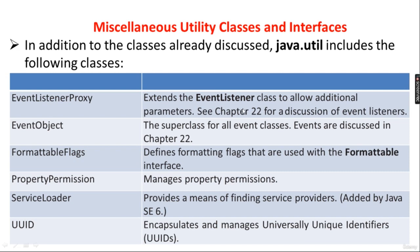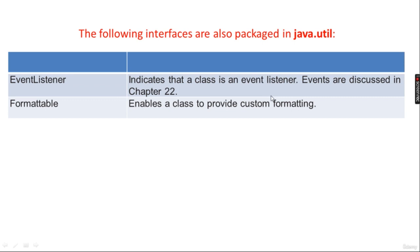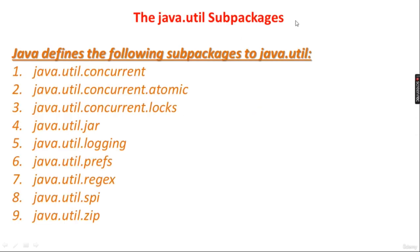Now we will see miscellaneous utility classes and interfaces. EventListenerProxy extends the EventListener class to allow additional parameters. EventObject is the superclass for all event classes. FormatableFlags defines formatting flags used with the Formatable interface. PropertyPermission manages property permissions. ServiceLoader provides a means for finding service providers, added by Java 6. UUID encapsulates universally unique identifiers. Formatable interface enables a class to provide custom formatting.